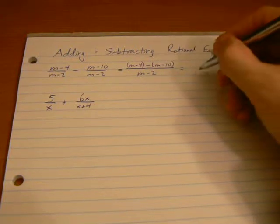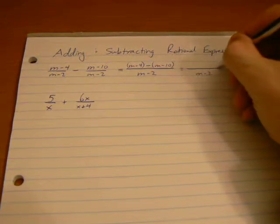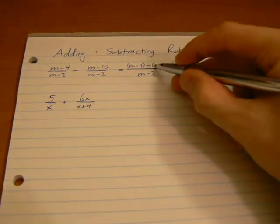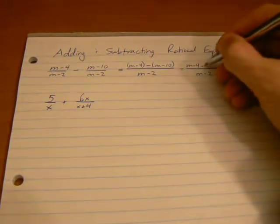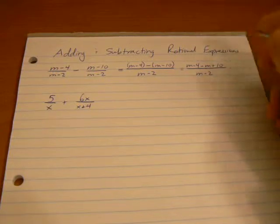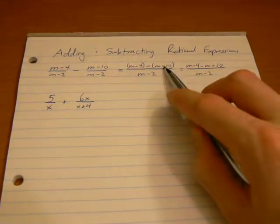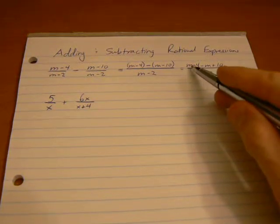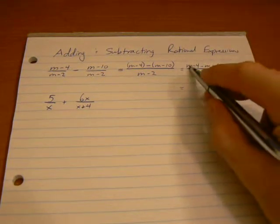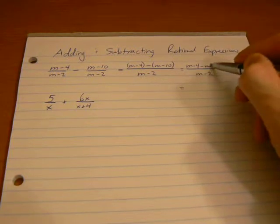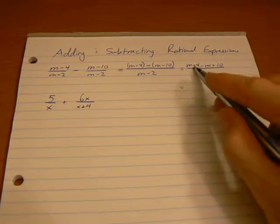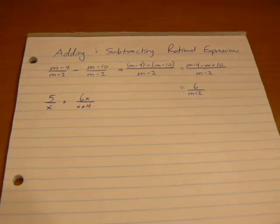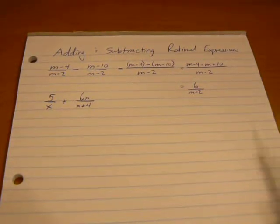Let's rewrite this without the brackets. Again, the denominator stays the same. m-4 and because we're subtracting this binomial here, we're going to flip the sign of each term inside. So this positive m becomes a negative m and this negative 10 becomes positive 10. We can simplify the numerator. We've got m minus m, so those are going to subtract to 0. And we've got negative 4 plus 10, which gives us 6 over our denominator of m-2. That's as far as we can go with this.